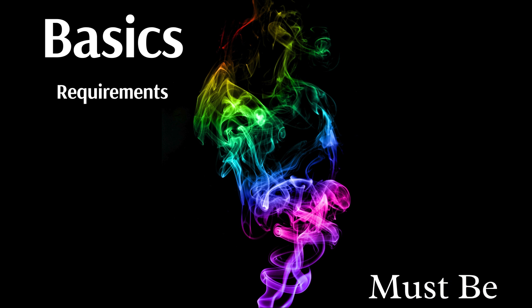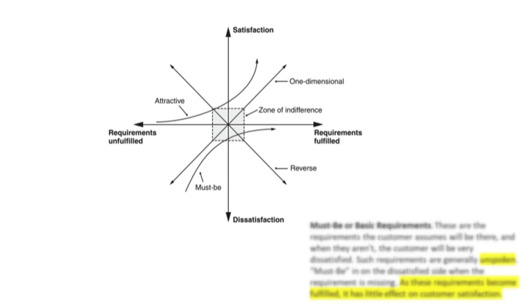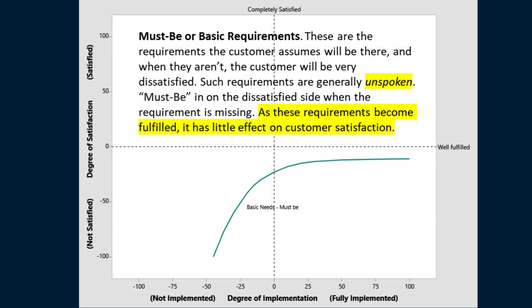The basic requirements. The customer assumes they will be there, and when they are not, the customer becomes very dissatisfied. Such requirements are generally unspoken. These requirements cause dissatisfaction when missing, but as they are fulfilled or implemented, it has little effect on customer satisfaction.